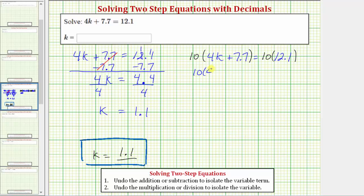Let's show each product. We would have 10 times 4k plus 10 times 7.7 equals 10 times 12.1. So here we have 10 times 4k, that's 40k, plus 10 times 7.7 is 77. Notice how by multiplying by 10, we eliminated the decimal. And 10 times 12.1 is 121. Notice now the equation does not contain any decimals, and the solution to this equation will be the same as the solution to the original equation.